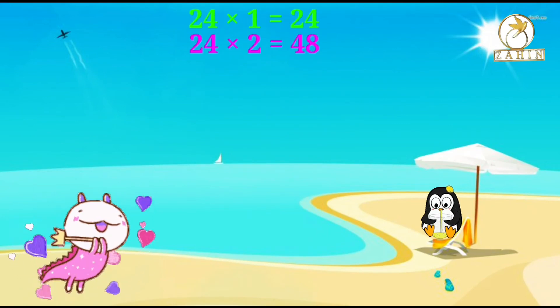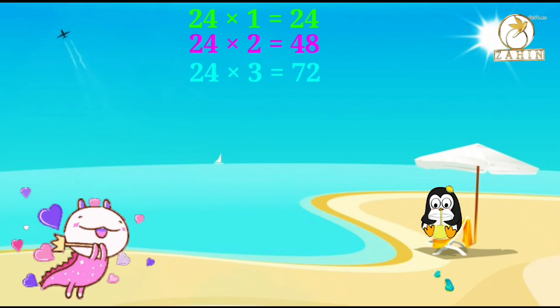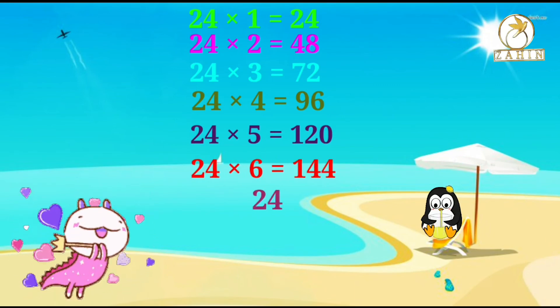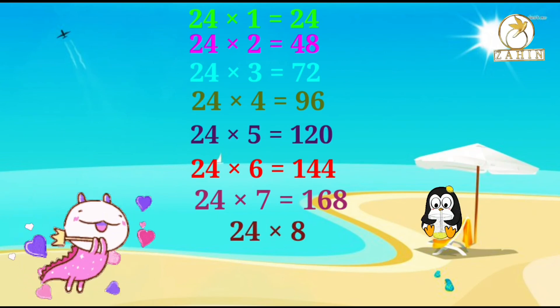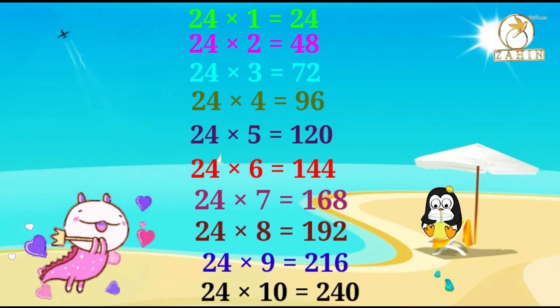24 times 2 equals 48, 24 times 3 equals 72, 24 times 4 equals 96, 24 times 5 equals 120, 24 times 6 equals 144, 24 times 7 equals 168, 24 times 8 equals 192, 24 times 9 equals 216, 24 times 10 equals 240.